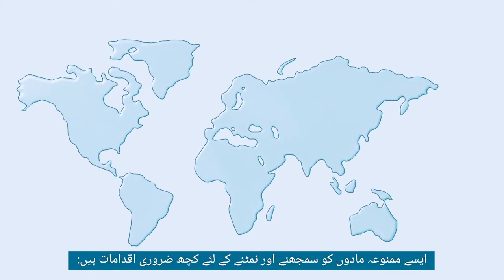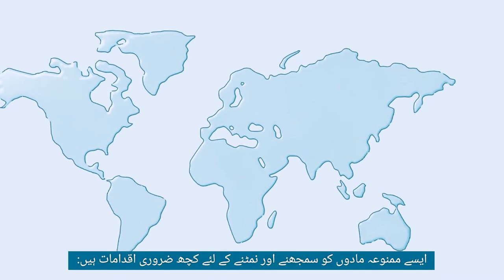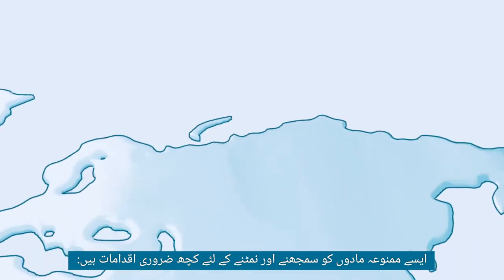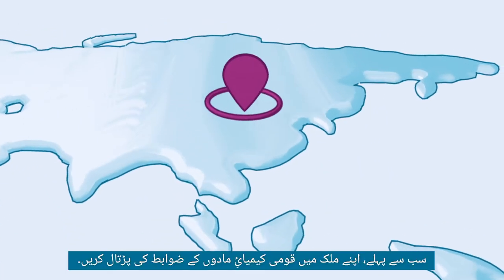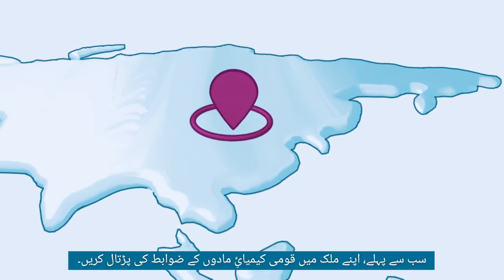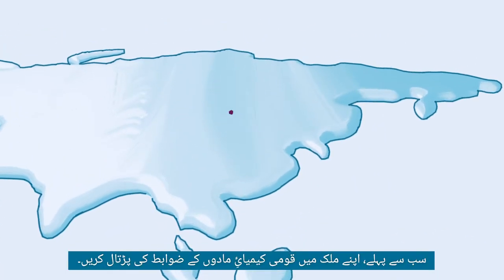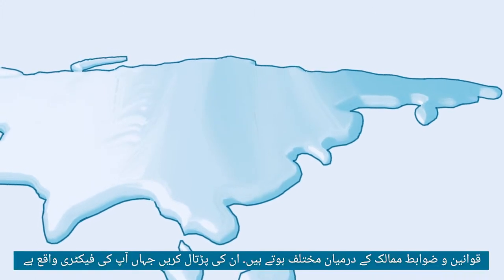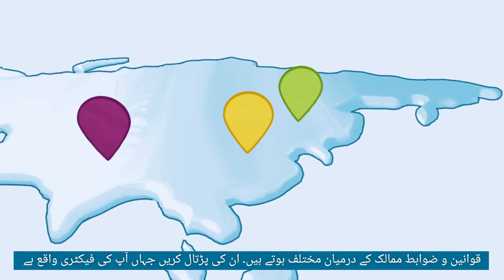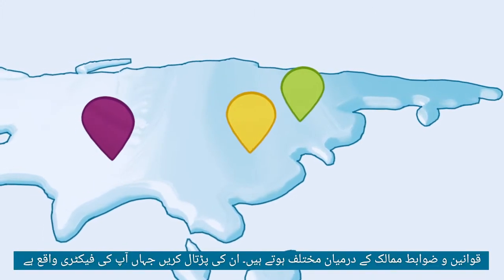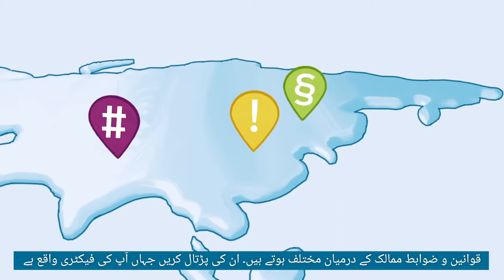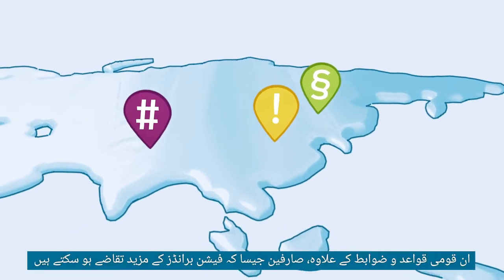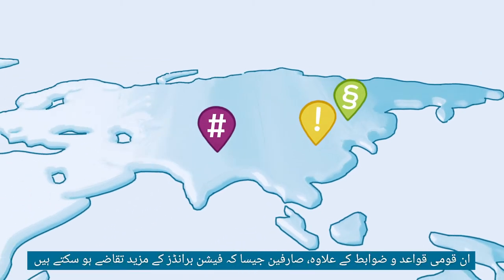There are a few essential steps to understanding and dealing with such restricted substances. First, check the national chemical regulations in your country. Regulations differ among countries — check those where your factory is located.